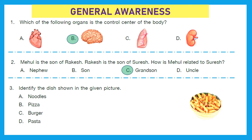Question 3: Identify the dish shown in the given picture. Yummy and delicious — it is pasta. Option D is the right answer.